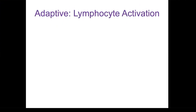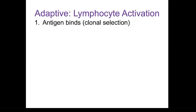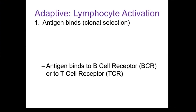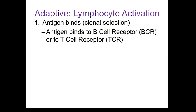Let's look at lymphocyte activation now. How does this occur? You start with a naive lymphocyte and it encounters its antigen. The antigen has to bind to either the TCR or the BCR, depending upon what type of lymphocyte you have. If it's a B lymphocyte, the antigen must bind to the BCR, and for a T lymphocyte, to the TCR. Recall that these receptors are proteins and are specific to the antigen. The first step of activation is the binding of the antigen to the receptor.